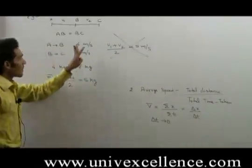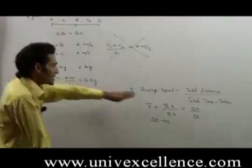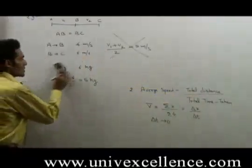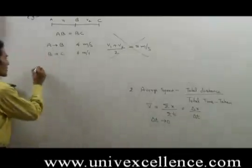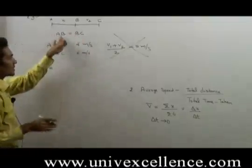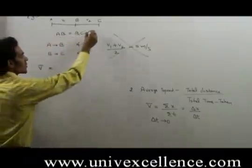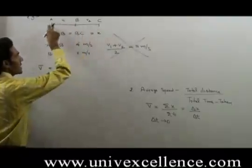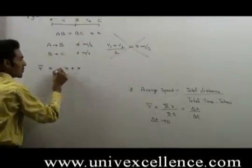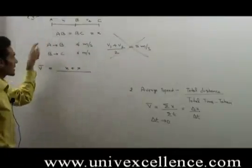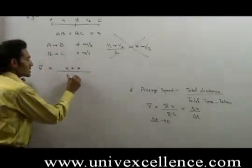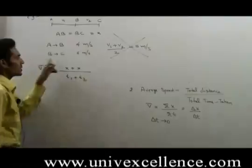Because average speed is always equal to total distance upon total time taken. So average speed equals total distance. Since AB is equal to BC, suppose each is equal to X. Then total distance is X + X = 2X, upon total time, where T1 is the time taken from A to B and T2 is the time taken from B to C.